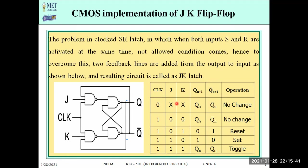The JK flip-flop is used to overcome a problem in the SR flip-flop. When both inputs of the SR flip-flop are activated simultaneously, we get an invalid state — also called the toggling state. To solve this problem, the JK flip-flop uses feedback lines. One feedback goes from Q̄ to the J input line, and another from Q towards the K input.